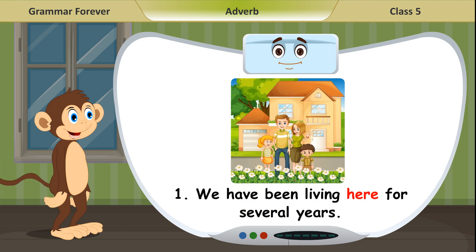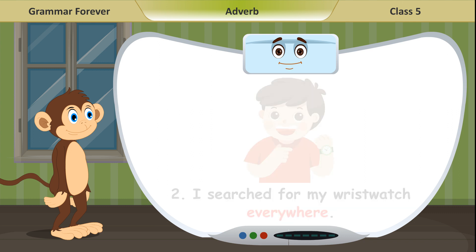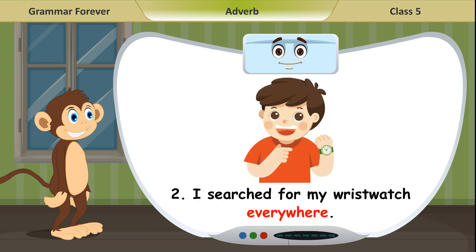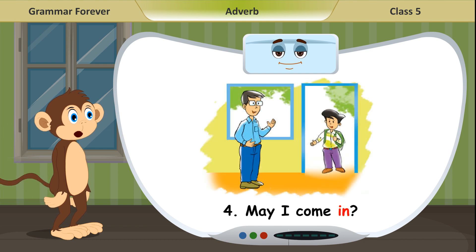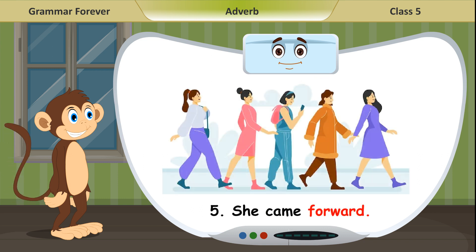Examples of Adverbs of Place in sentences: 1. We have been living here for several years. 2. I searched for my wristwatch everywhere. 3. They went upstairs. 4. May I come in? 5. She came forward. 6. I decided to go there.